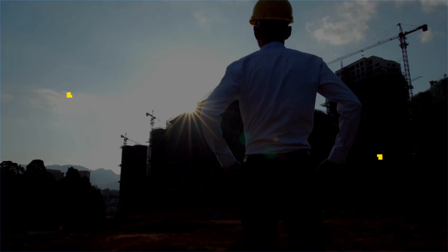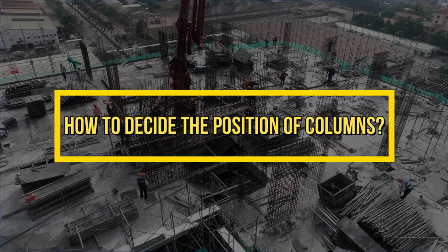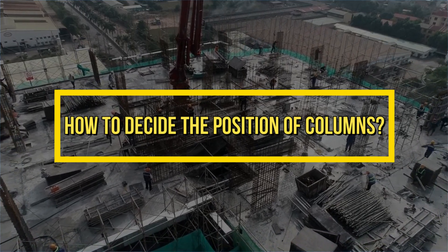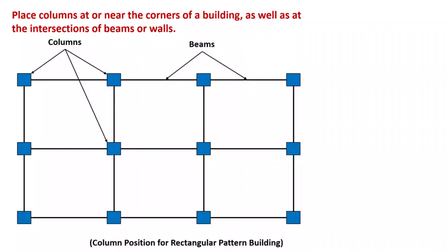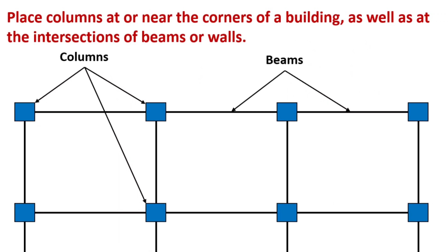In this lecture, I am going to discuss how we can decide the position of columns while doing structural planning. One common practice is to place columns at or near the corners of a building as well as at the intersections of beams or walls.